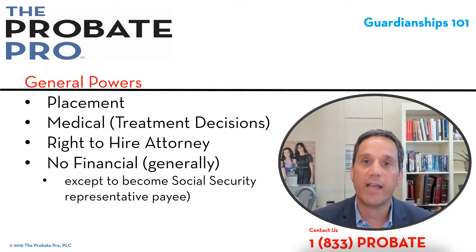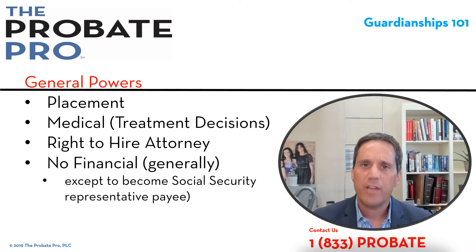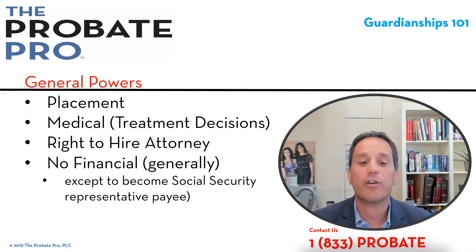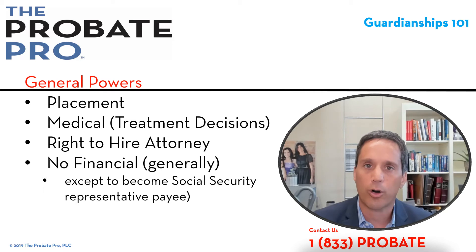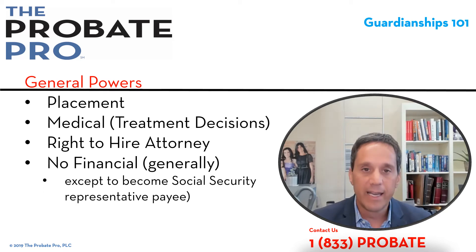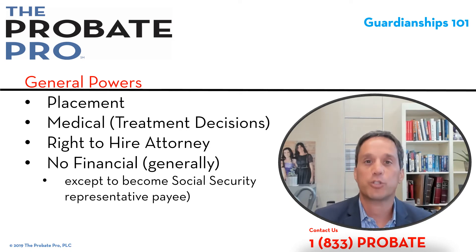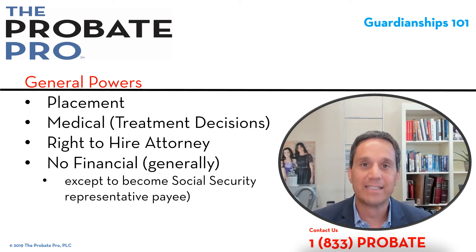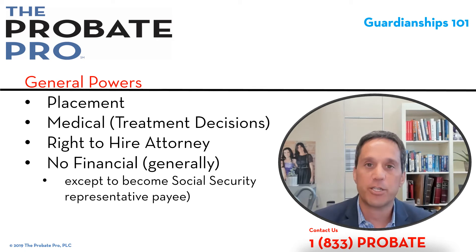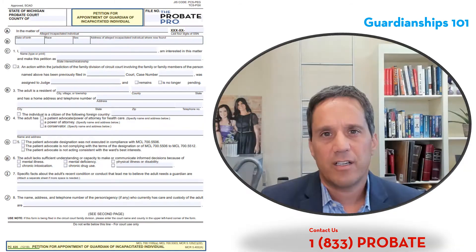A guardian's powers are defined and created by a court order, and the letter of guardianship will identify any limitations or restrictions on those powers. Generally, they have the power for placement, medical treatment and related decisions, and the right to hire an attorney. A guardian generally does not have financial authority, although it can be created by court order. The only thing a guardian inherently has the right to do is become the representative payee for Social Security benefits. If a guardian identifies that the individual has assets, that would be the basis for filing a petition to establish a conservatorship.